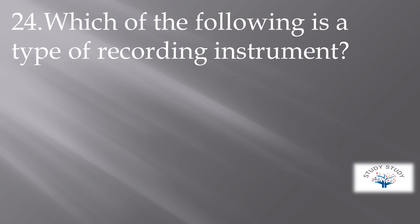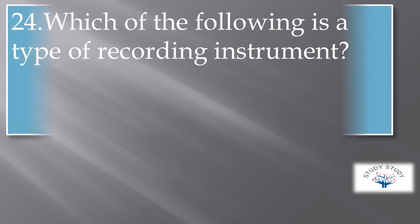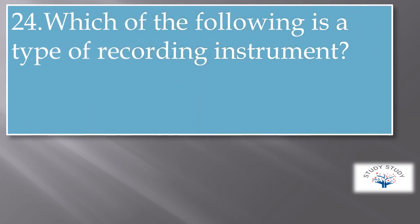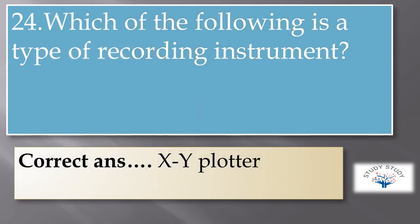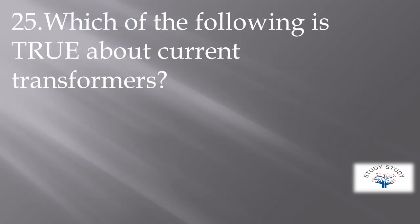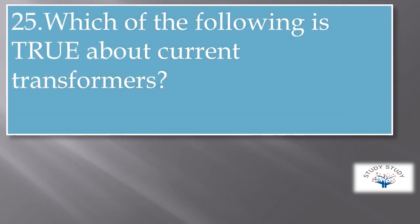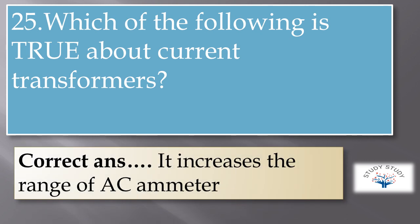Which of the following is a type of recording instrument? The correct answer is XY plotter. Energy meters are also recording instruments. Which of the following is true about current transformer? The correct answer is it increases the range of an AC ammeter.